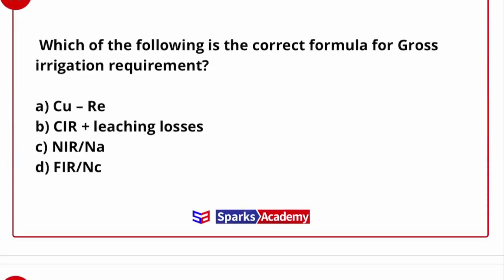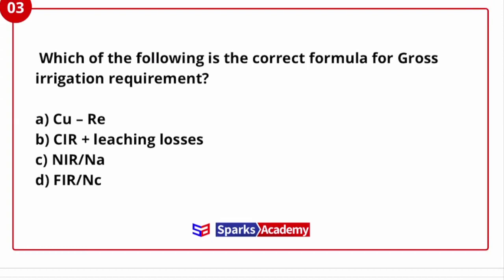Which of the following is the correct formula for gross irrigation requirement? When we supply water through a canal, there are losses — like canal loss, runoff, and percolation loss — as well as conveyance losses during operation and transfer. We need to consider all of these losses.